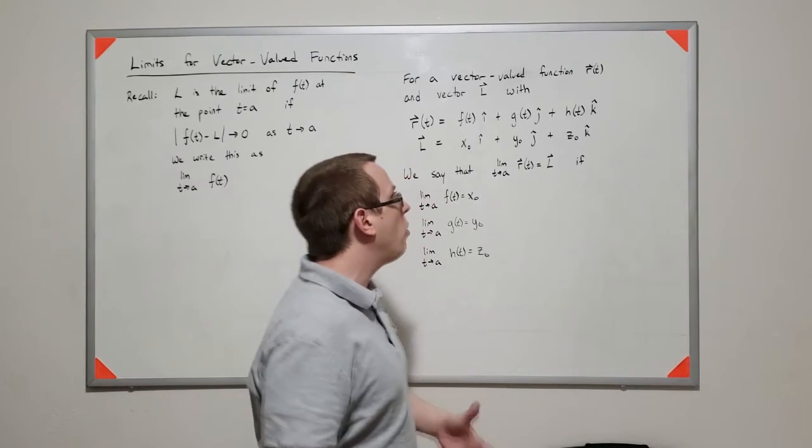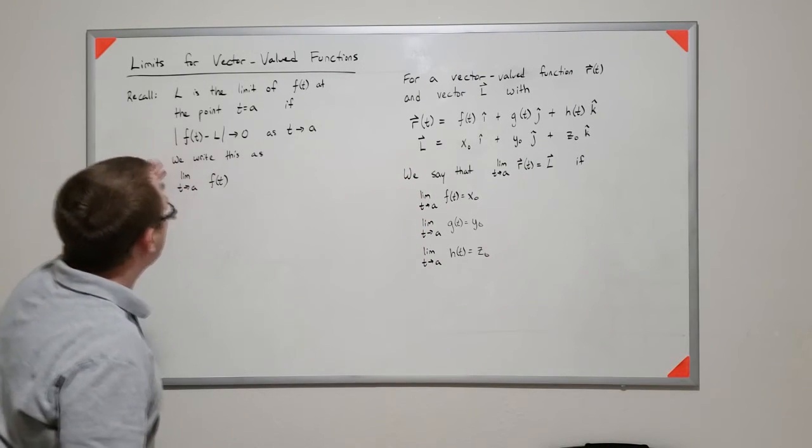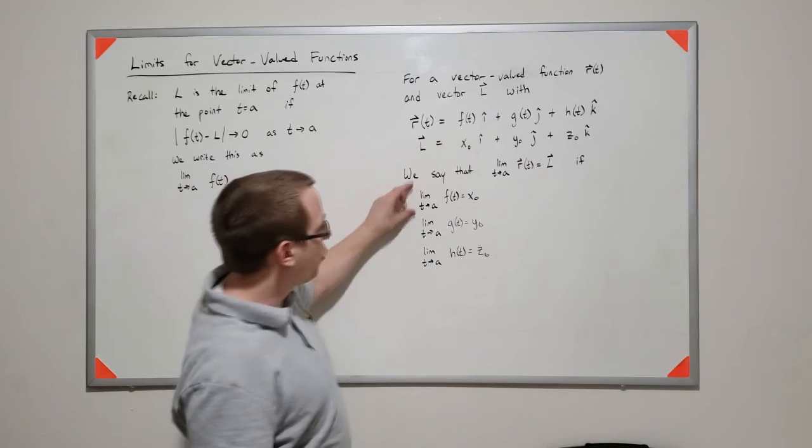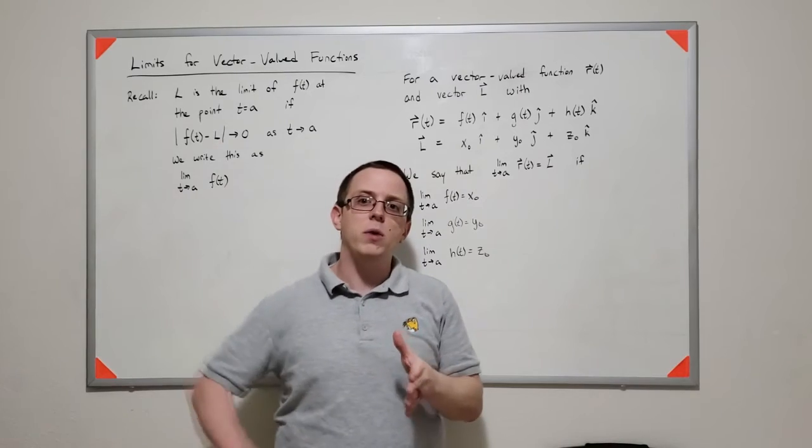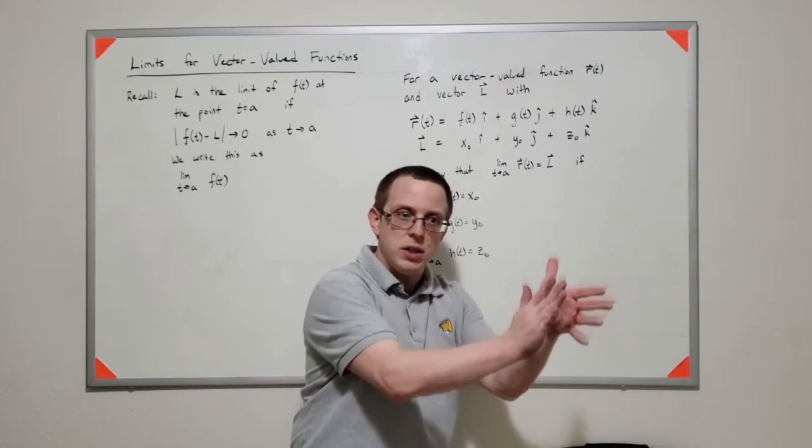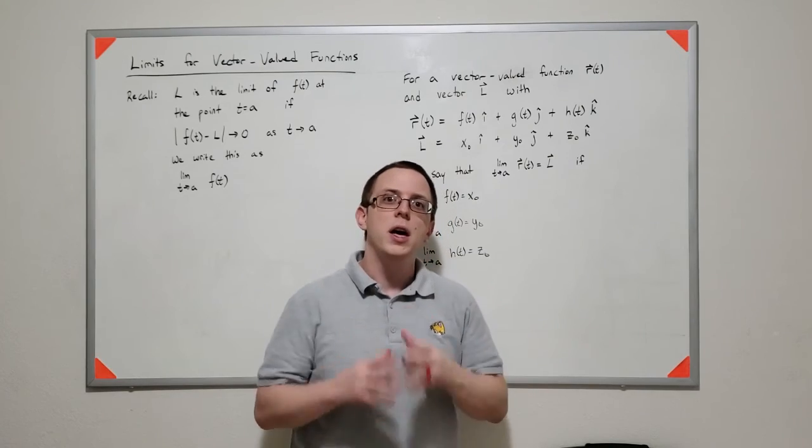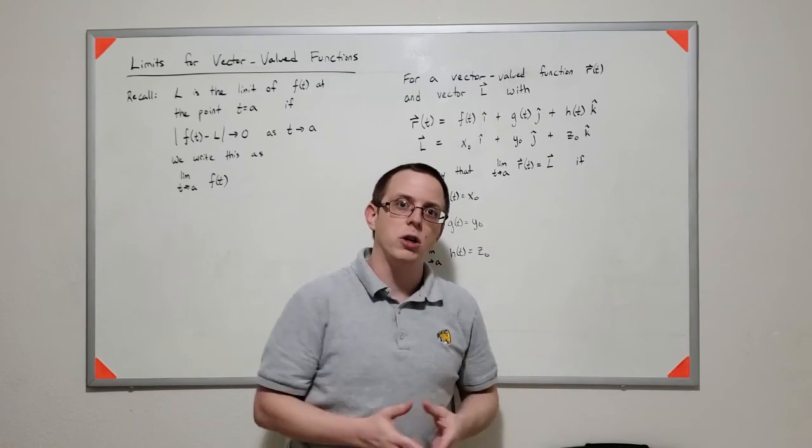Now this makes intuitive sense. All you're really doing is, instead of taking a single limit here, you're taking three limits. And so the way we're going to evaluate these is, we're going to evaluate those limits individually. As long as they all converge to the point, then we know that the vector-valued function converges to that vector.